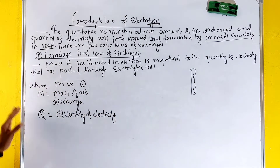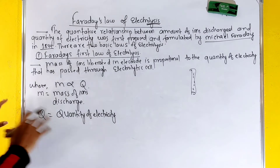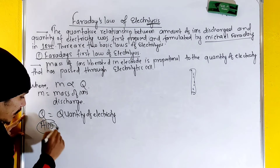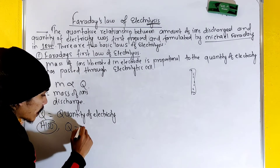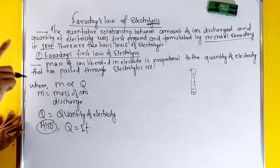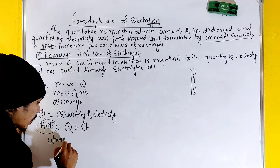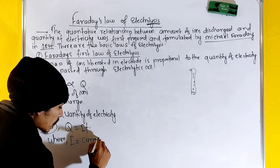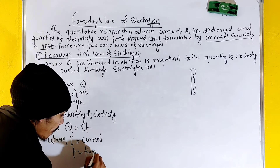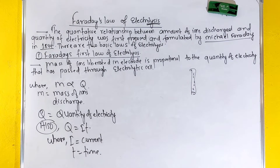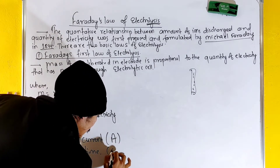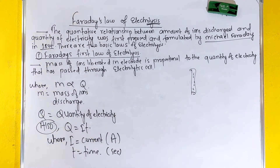The quantity of electricity Q equals I times t, where I means current and t means time taken. Current is measured in amperes and time is measured in seconds.